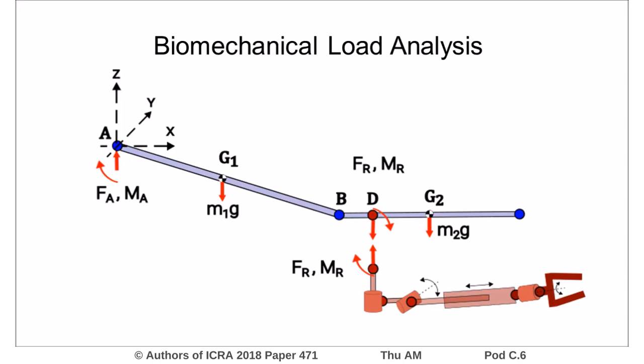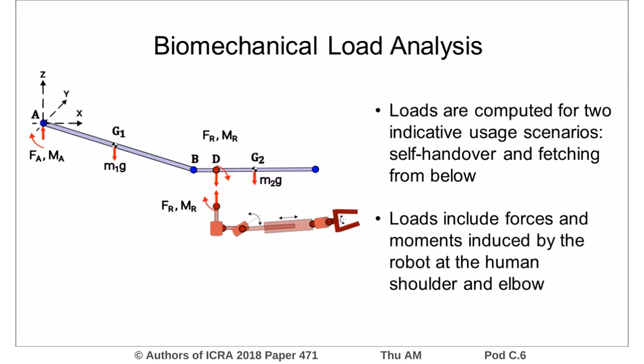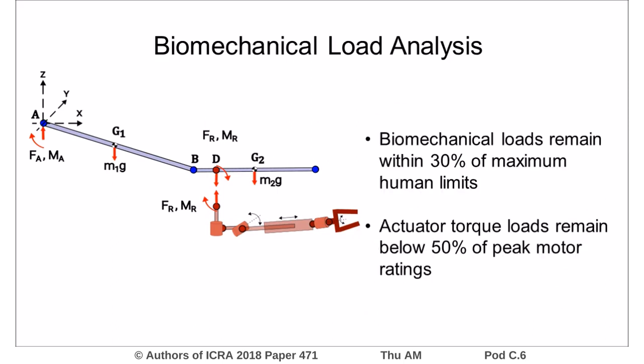We also analyzed the loads that the device exerts on the user by studying the free-body diagrams of the human and robot. The loads were computed for two scenarios: self-handover and fetching from below, and they included the forces and moments induced by the robot at the human shoulder and elbow. We found that the biomechanical loads remained within 30% of maximum human limits, and the load on the motors did not exceed 50% of the peak rating.